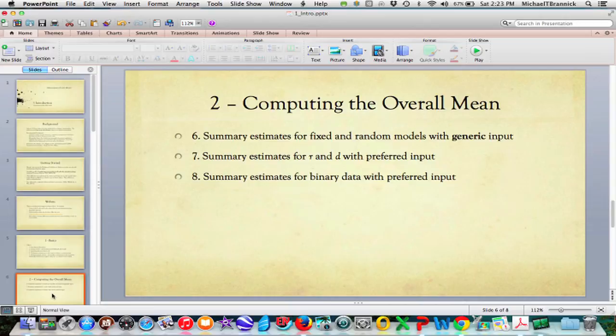In seven, we'll talk about summary estimates for r, the correlation coefficient, and d, the standardized mean difference when you have preferred input. Eight will be summary estimates for binary data when you have preferred input.